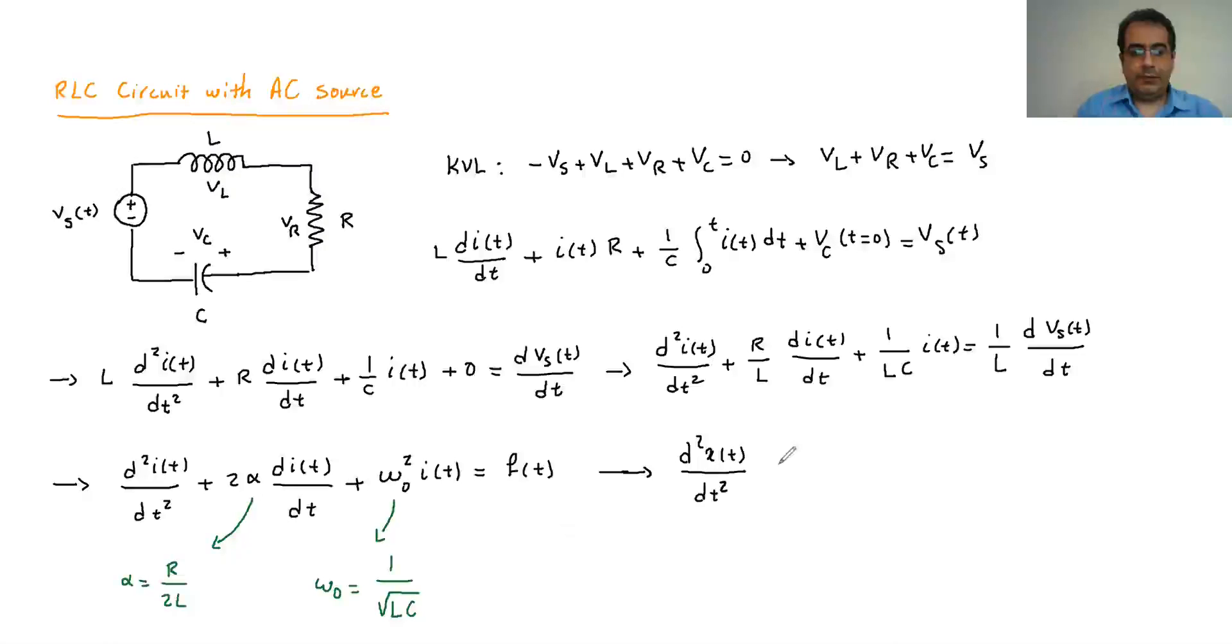Plus 2α dX(t) divided by dt, plus ω₀² X(t), we're gonna be equal to the F(t). And if we have that, the solution for that, the X(t), would be the same as before.